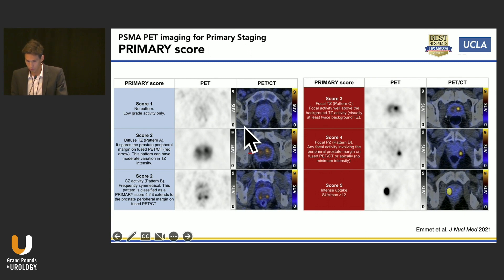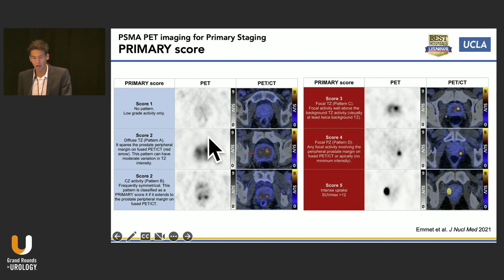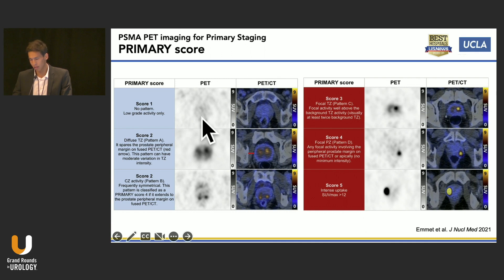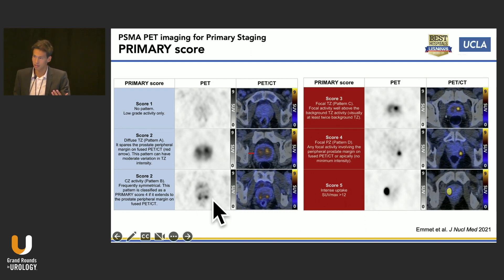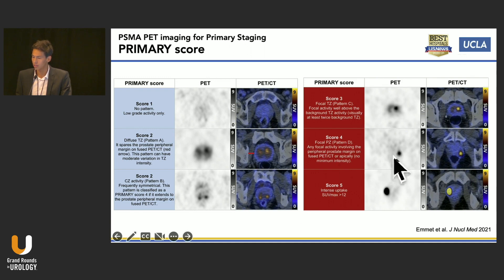Earlier this year, there was a study that looked at the primary trial run in Australia in patients with Gleason grade 2 and grade 3 disease. They tried to come up with a visual scoring system to categorize patients with high-risk or clinically significant disease. Basically, when the signal is focal and asymmetric, it is very likely clinically significant prostate cancer. When it's diffuse, not very focal, with symmetric uptake, it is less likely to be clinically significant. So the field is learning, little by little, how to read the images and characterize the signal within the prostate.